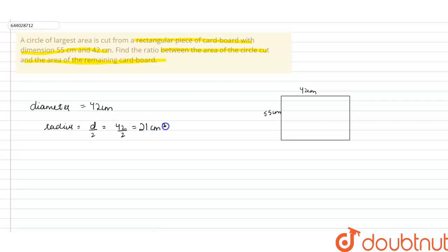Now area of this circle will be equals to pi r square, that means 22 by 7 into 21 into 21, which is equal to 1386 centimeter square.